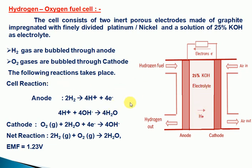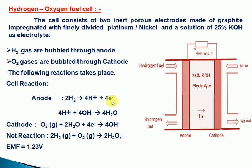Hydrogen gas is passed through the anode, and oxygen gas is continuously passed through the cathode. Oxidation occurs at the anode: hydrogen gas is oxidized, producing 4H⁺ and releasing 4 electrons into the external circuit down to the cathode. The 4H⁺ combines with 4OH⁻ to form water molecules.